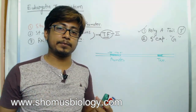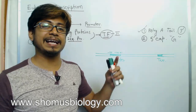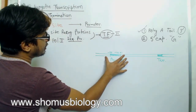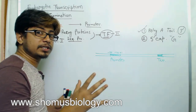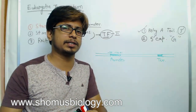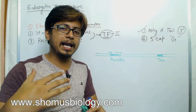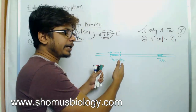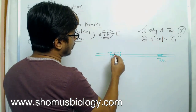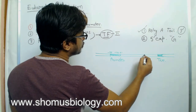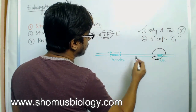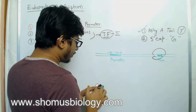Transcription begins at the start site, and we know how transcription begins — it involves many transcription factors together that allow RNA polymerase II to escape the promoter. So now as RNA polymerase II escapes the promoter and starts moving, it ultimately reaches the termination sequence.